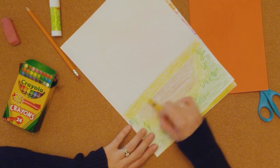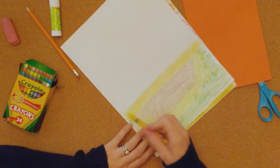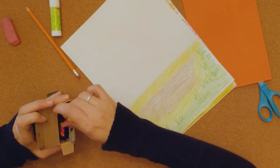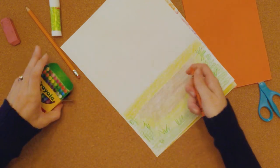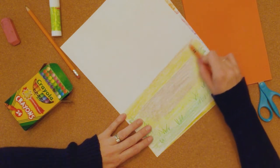Now the next color, and these colors go in order on the color wheel, would be orange. And I like using, you can use yellow-orange or orange. I'm going to just use regular orange.